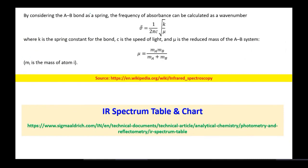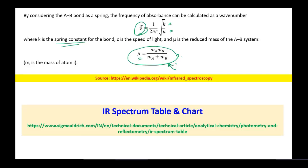By considering the A-B bond as a spring, the frequency of absorbance can be calculated as a wave number, given by (1/2πc)√(k/μ), where k is the spring constant and μ = (mₐmᵦ)/(mₐ + mᵦ), where mₐ and mᵦ are the masses of atoms A and B. This is the relationship showing how the masses of A and B affect the frequency of vibrations. With this we will stop today, and we will start the next topic in the next class.